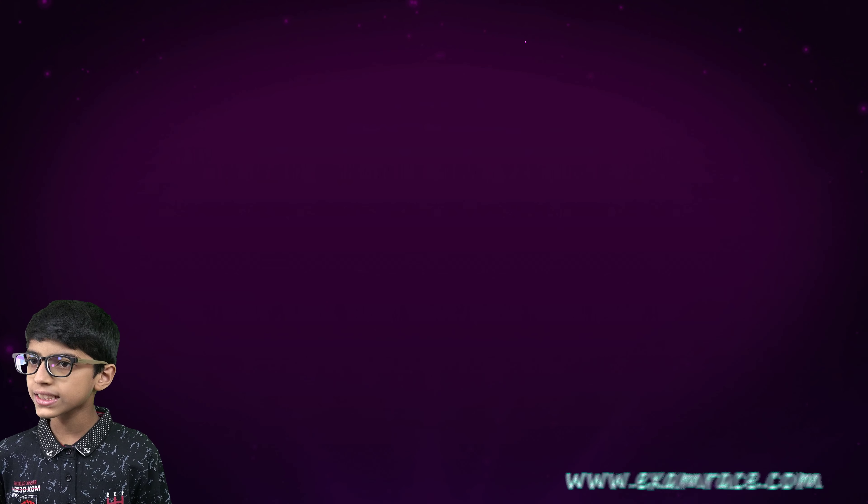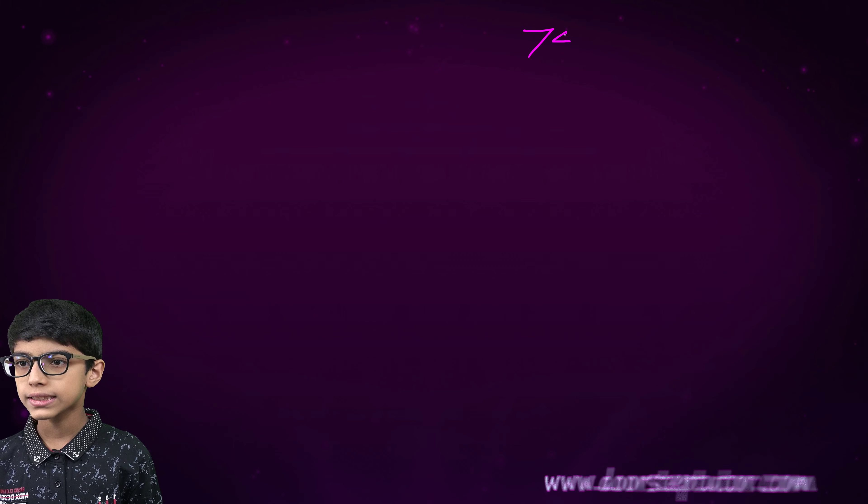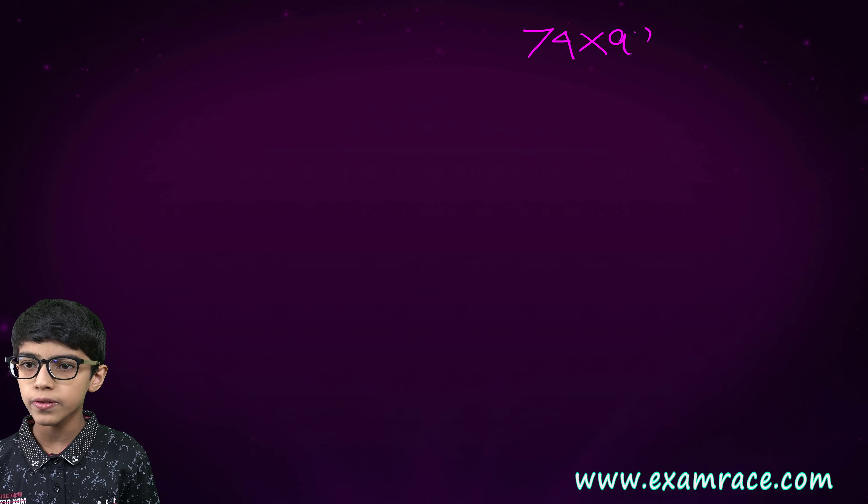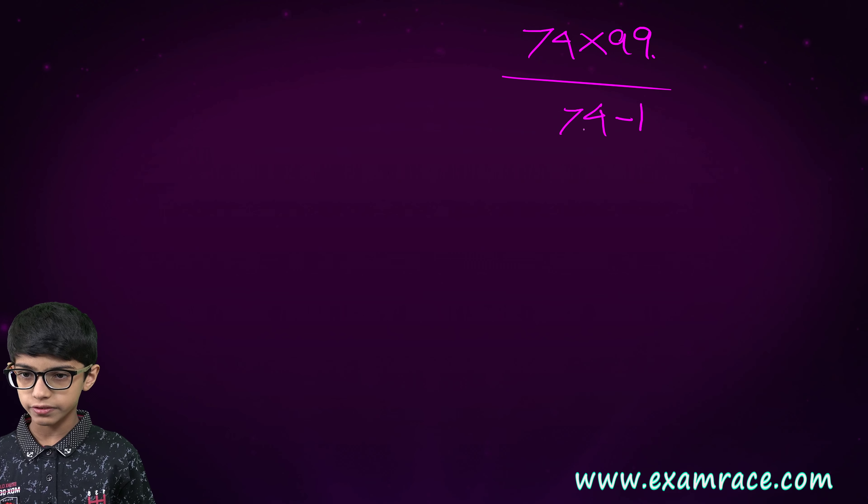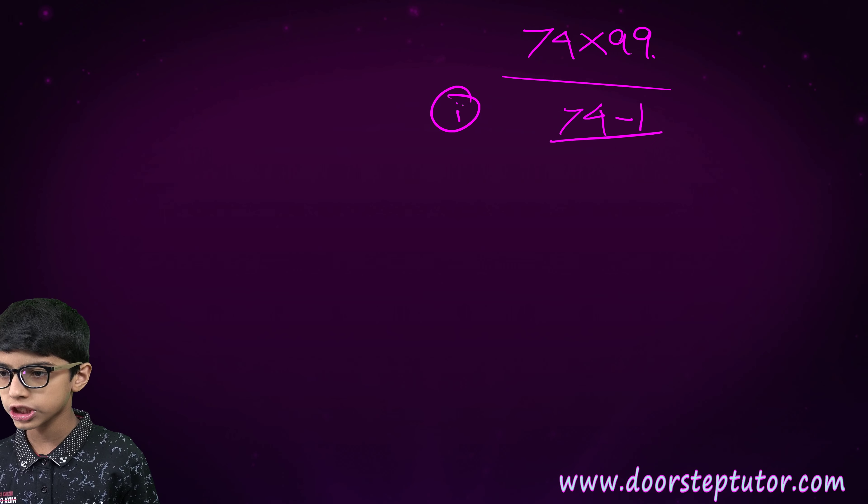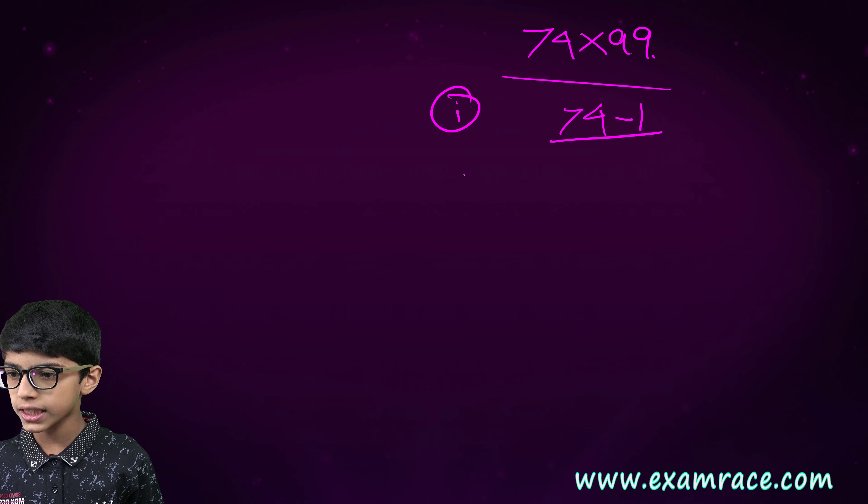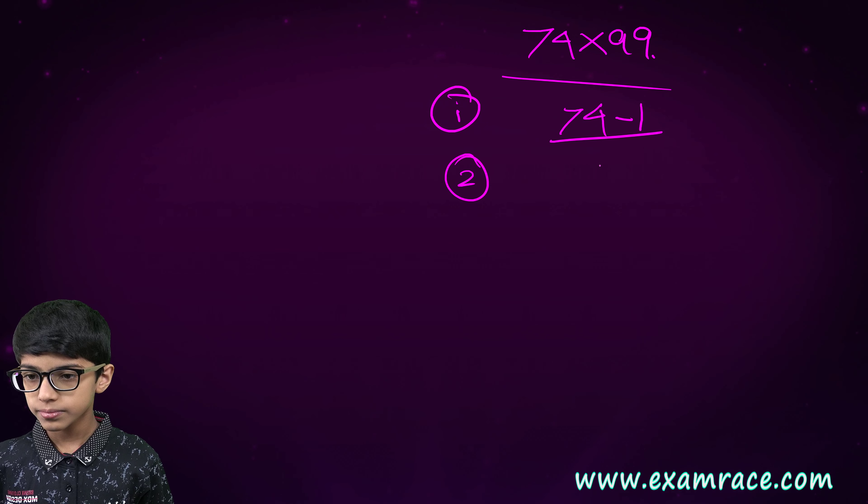Now let's take an example. 74 into 99. 74 minus 1. This is the first step. 74 minus 1 is 73.